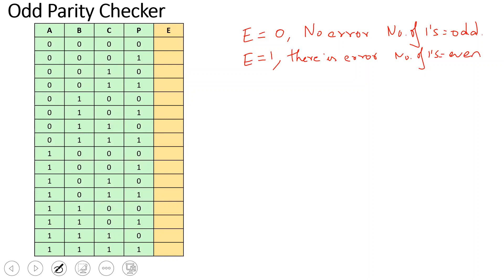So first row: 0, 0, 0, 0. If you look at the number of ones, the number of ones is 0, which is even. Then there is an error, so error output is 1. Next row is 0, 0, 0, 1. The number of ones is 1, which is odd, so this will become 0. Next row is 0, 0, 1, 0. Number of ones is again 1, which is odd, so error output is 1... this will become 0.